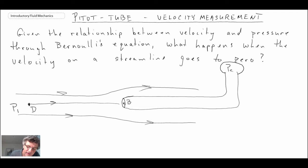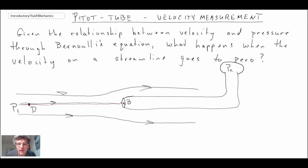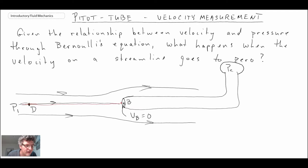We have a thing called a stagnation streamline — that's the streamline right in the middle. The flow comes along and slows, eventually reaching point B where it stagnates, meaning it stops. Consequently, we call this the stagnation streamline, and the key characteristic is that the velocity at B is equal to zero. The pressure measured there is what we call the total pressure in the flow.